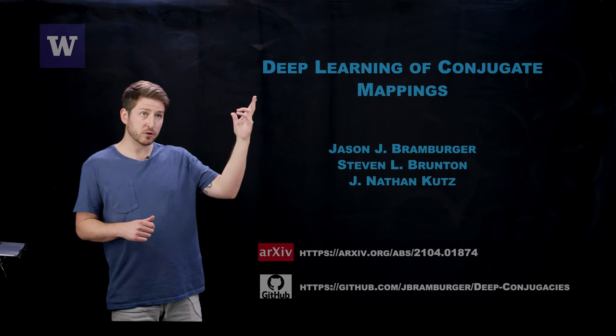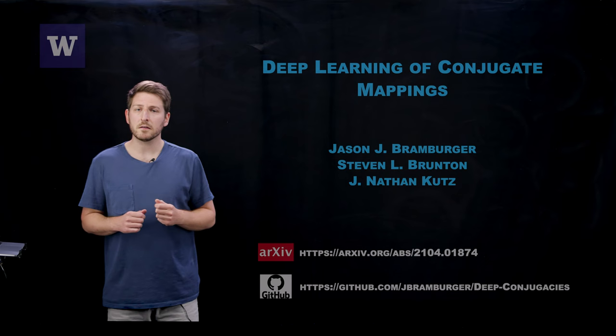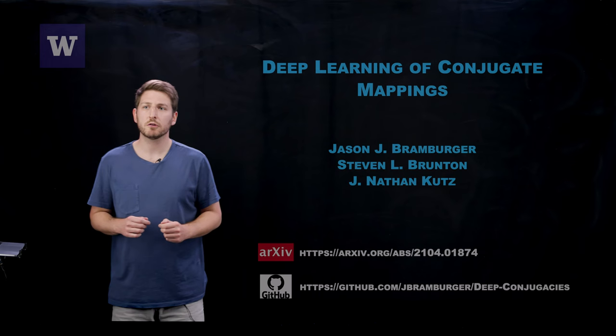We've titled this project Deep Learning of Conjugate Mappings, and there's a paper of exactly the same name that can currently be found on the arXiv that summarizes all of the results that you're going to see here today. And at this GitHub repository, you can find the code that's associated to the paper to reproduce all of the findings and the figures.